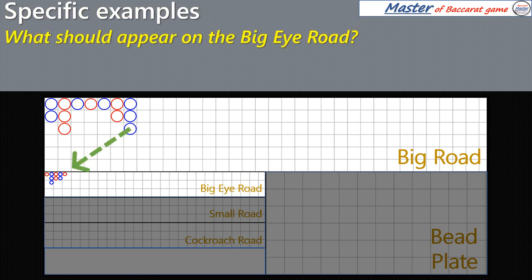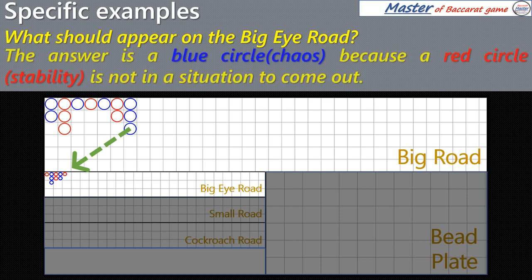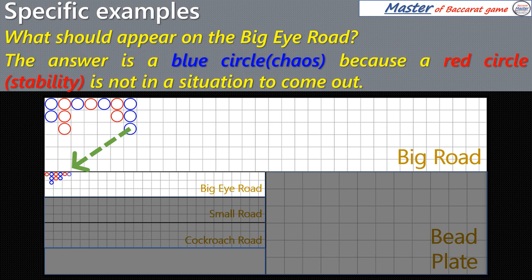What should appear on the Big Eye Road? The answer is a blue circle, because a red circle is not in a situation to come out.